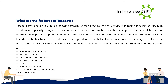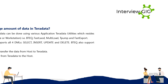What are the features of Teradata? Teradata contains a huge data processing system with a shared-nothing design, thereby eliminating resource competition. It is especially designed to accommodate massive information warehouse implementations and has several information deposition options embedded into the core. With linear scalability, software will scale linearly with hardware. Other features include unconditional parallelism, intelligent information distribution, a parallel-aware optimizer, unlimited parallelism, robust utilities, automatic distribution, a mature optimizer, SQL, linear scalability, shared-nothing architecture, and connectivity.